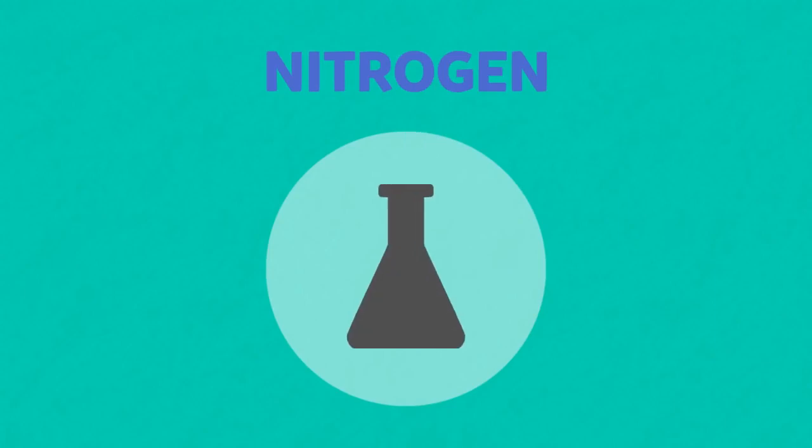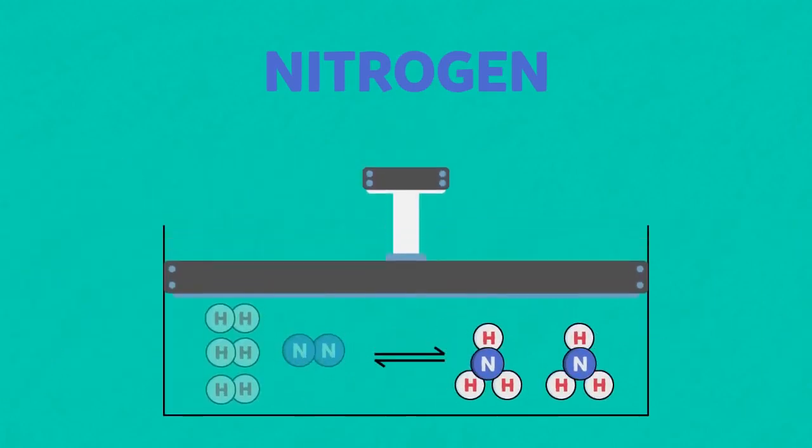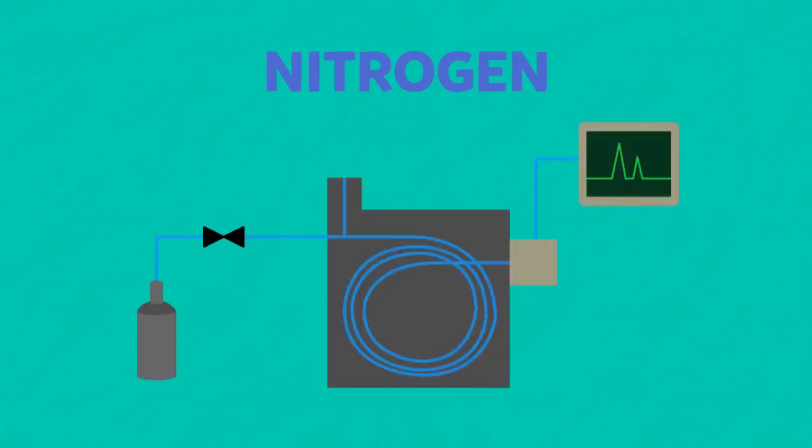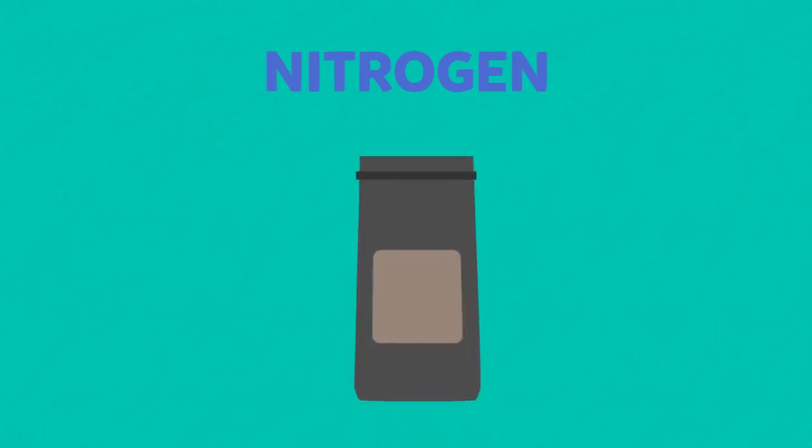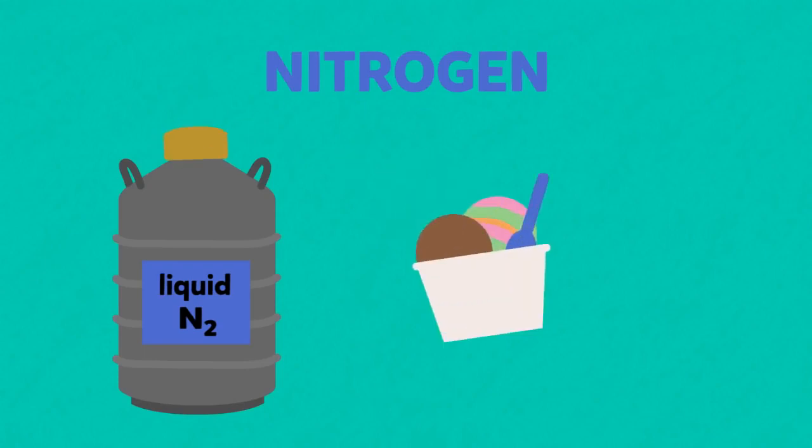The important uses for nitrogen are creating an inert atmosphere for chemical processes, the Haber process for the manufacture of ammonia, gas chromatography, packing oxidisable foods such as ground coffee, and also, liquefied nitrogen can be used for the freeze drying of food and preservation of tissue samples.